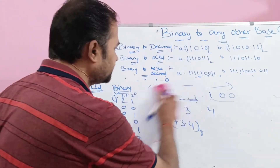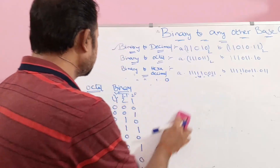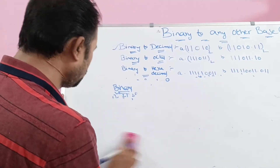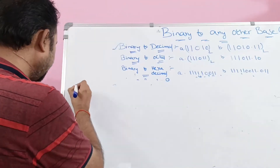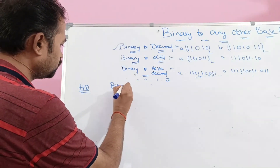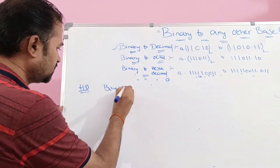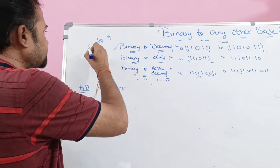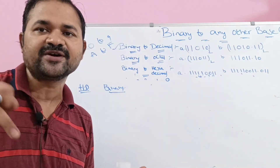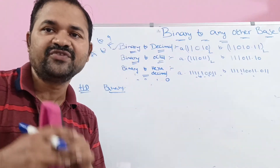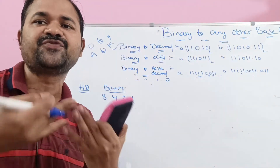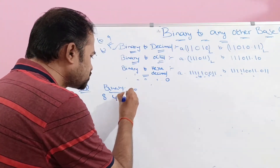Now let us see binary to hexadecimal conversion. For a given binary number we must find the corresponding hexadecimal number. Hexadecimal is a combination of 10 symbols from 0 to 9 and A to F. We require 4 bits to represent values from 0 to 15, using 8-4-2-1 notation.